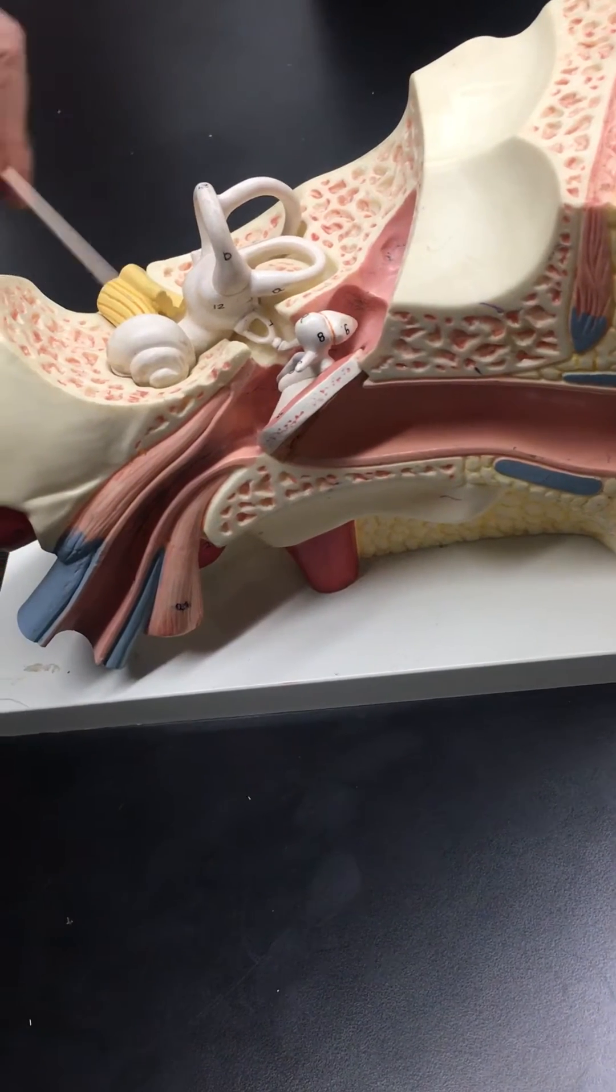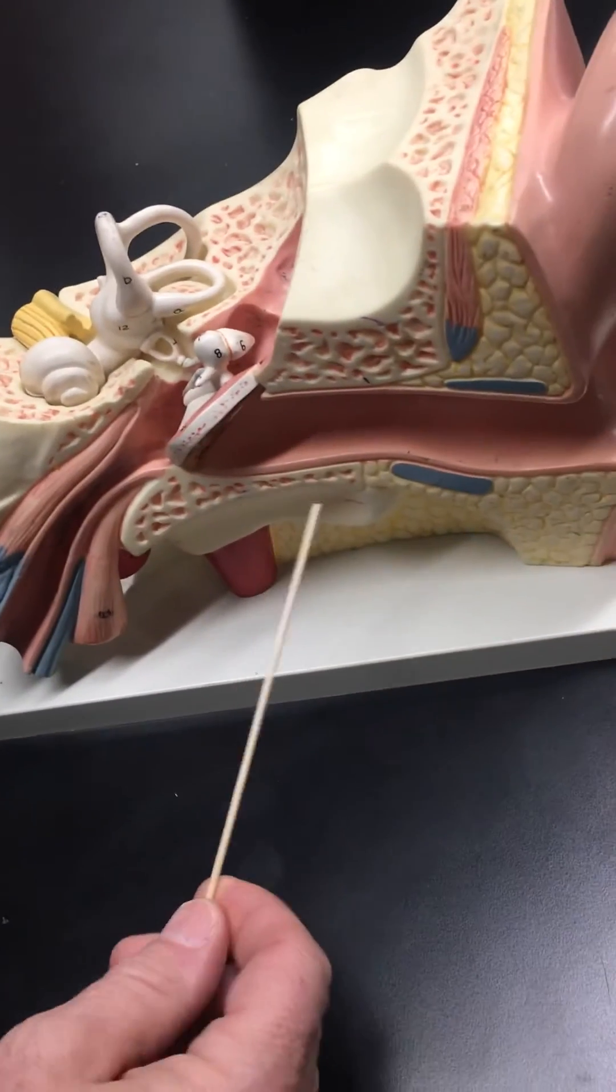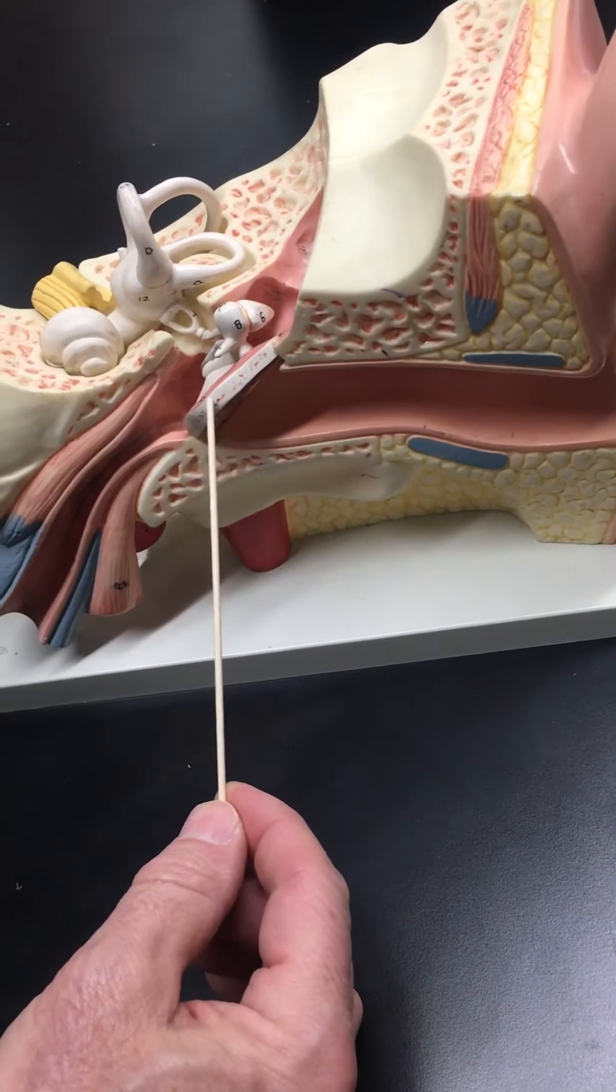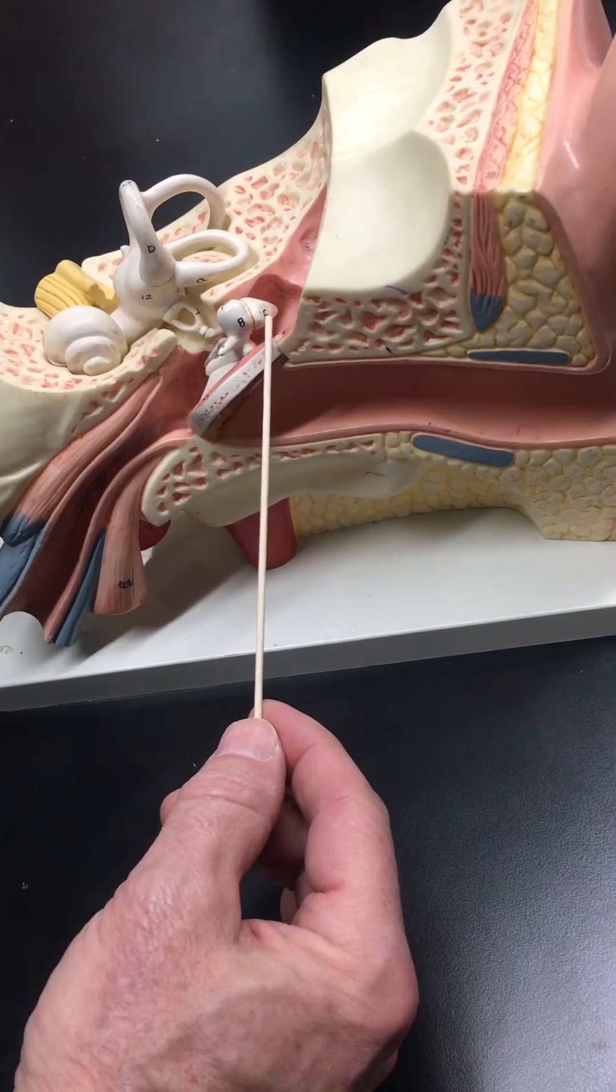External acoustic meatus. So the flow is: sound waves come in, vibrate the tympanic membrane, which vibrates the malleus, which vibrates the incus.